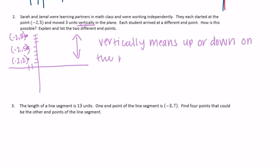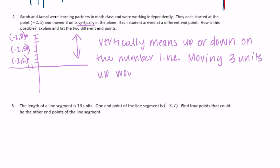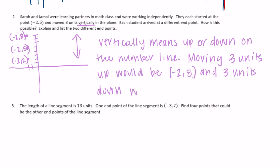Vertically means up or down. Moving three units up would give you the endpoint (-2, 8), and moving three units down would give you the endpoint (-2, 2).